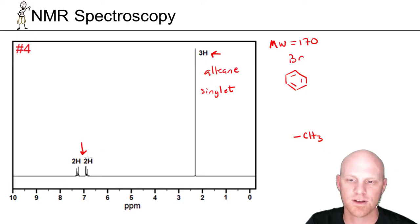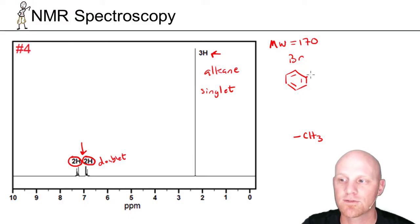Going back to this aromatic region, we've seen this pattern before, and I highly recommend it's one you commit to memory. We've got two doublets that represent two H's each. That's a benzene ring with symmetry, and we're going to have two substituents coming off our benzene in a para-disubstituted pattern on opposite sides. That way we maintain some sort of symmetry.